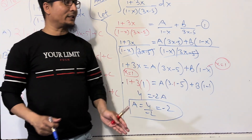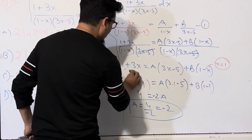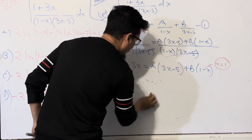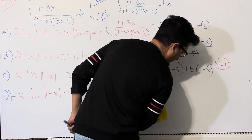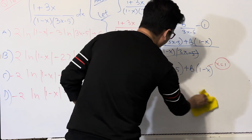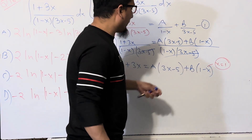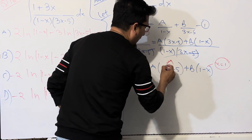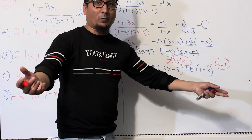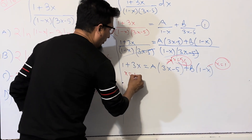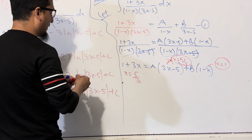In the same way, we find B. To eliminate A, we need (3x - 5) = 0, so x = 5/3. Substituting x = 5/3 on both sides, A becomes 0 and we can find B easily.